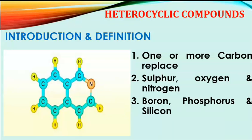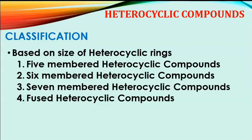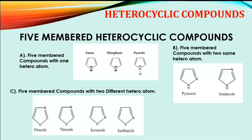This is an example of heterocyclic compounds. Now let's have a classification of heterocyclic compounds. Classification on the basis of heterocyclic rings is further divided into four classes: first, five-member heterocyclic compounds; second, six-member heterocyclic compounds; third, seven-member heterocyclic compounds; and fourth, fused heterocyclic compounds.